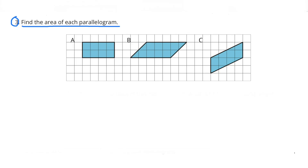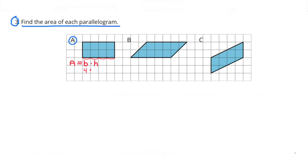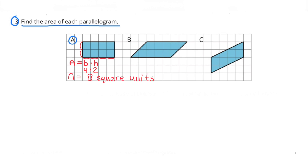Number 3: Find the area of each parallelogram. To find the area, you multiply base times height. Here we have a base of 4 and a height of 2, so 4 times 2 is 8. The area would be 8 square units.